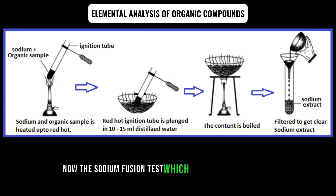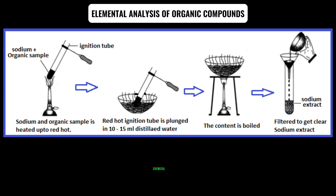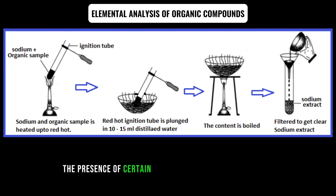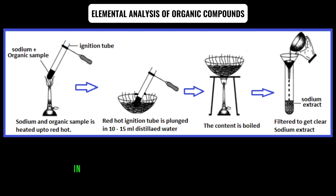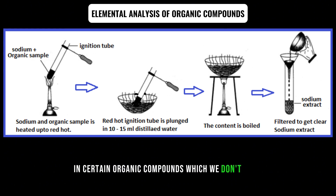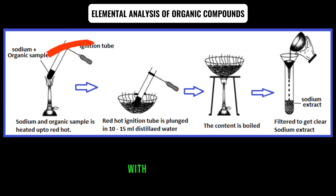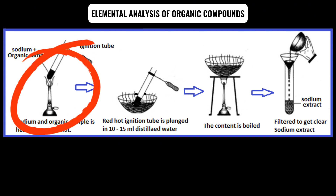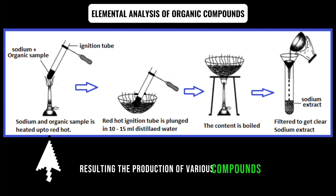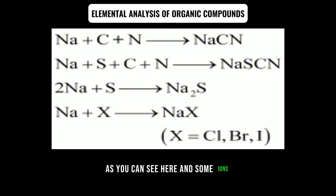The sodium fusion test, which we will be dwelling on, is a classic chemical test used in organic chemistry to identify the presence of certain functional groups and elements in organic compounds. This test involves the fusion of an organic compound with metallic sodium, resulting in the production of various compounds and ions, as you can see here.